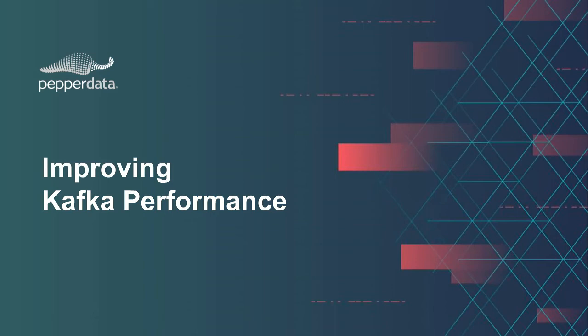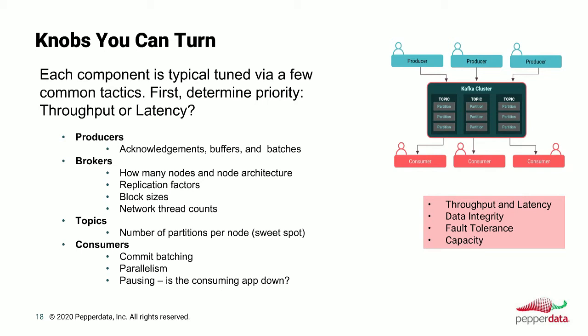Now we'll talk about improving performance. We understand the components at play and the performance gates along the way. When looking to improve performance, there are knobs to turn in each component area — producers, brokers, topics, and consumers. Each component has its own approach. Your first decision point is: am I tuning for throughput or latency? Is it most important to get all messages through, or to get them through as fast as possible?